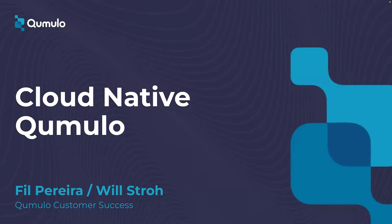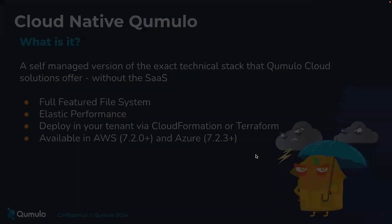If you have questions regarding CloudFormation, please reach out in your Slack channel and we can address those there. So, Cloud Native Cumulo - what the heck is it? Currently Cumulo offers a cloud version which is managed by Cumulo - we handle all the upgrades, you have GUI and API access to the cluster but it's kept in the Cumulo tenant. Cloud Native Cumulo is a self-managed version - everything you've come to know and love from Cumulo but you still get the file system, the exact same file system.